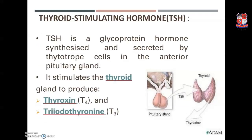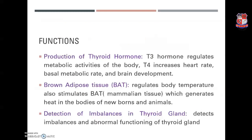Thyroid stimulating hormone (TSH) is a glycoprotein hormone synthesized and secreted by the thyrotropic cells in the anterior pituitary gland. It is released by the thyrotropic-releasing hormone and in turn controls the thyroxine level in the blood, stimulating the thyroid gland to produce thyroxine (T4) and triiodothyronine (T3). Functions include production of thyroid hormone, regulation of brown adipose tissue — generating heat in newborns and animals — and detection of imbalances in the thyroid gland.